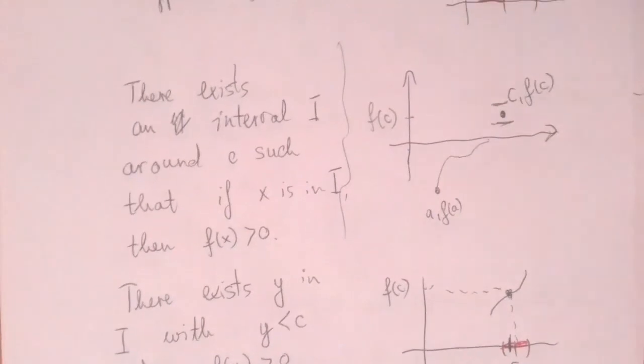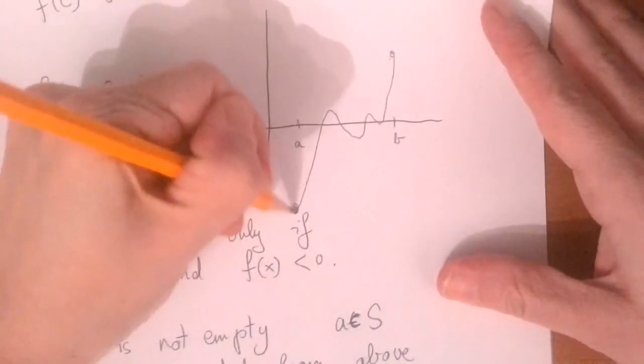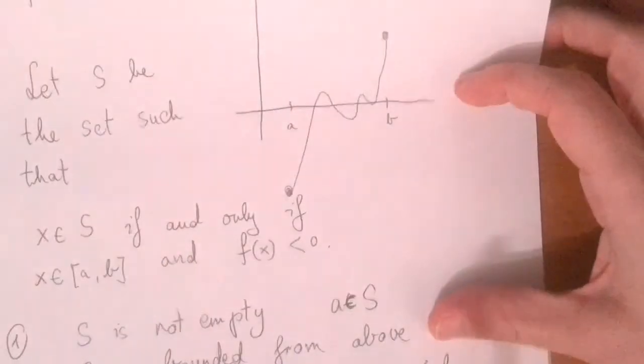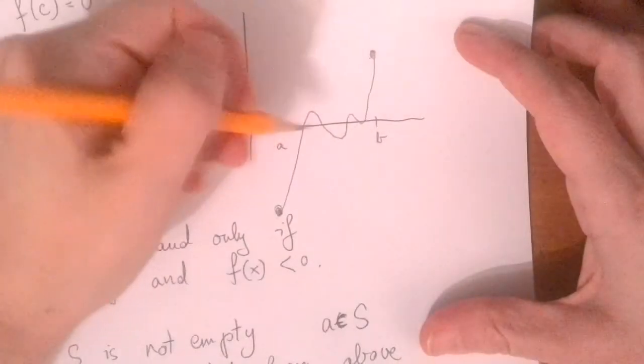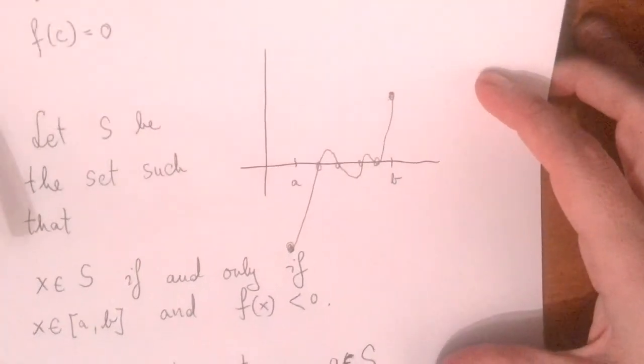A few comments: we assumed f of a is less than f of b. There is another case where f of a is greater than f of b, but that's a very similar argument — you can write out that proof as practice. Before we go, one question: we started with a continuous function where the beginning value was negative and the end was positive, and we proved there is a zero. Suppose we have a function with multiple zeros — which zero did we pick up? Think about that. Thank you for watching.